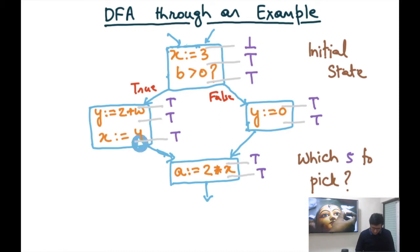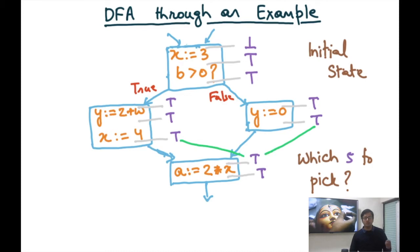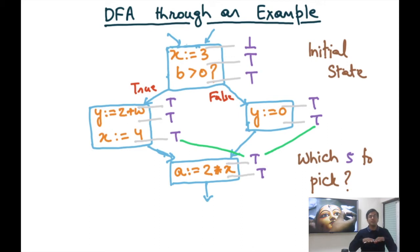Similarly, we look at the relation between the out of x:=4 and the in of a:=2*x. The predecessors' outputs are top and top, and the in of the successor is also top. This follows the rule because rule 4 says that if all predecessors are top, then the in of the successor should also be top.